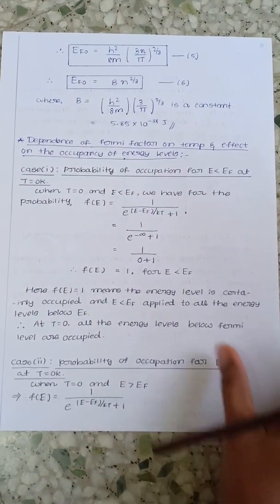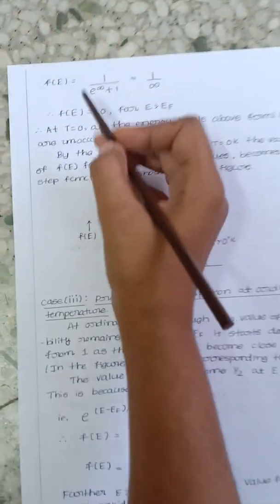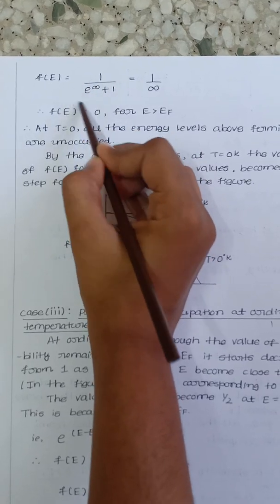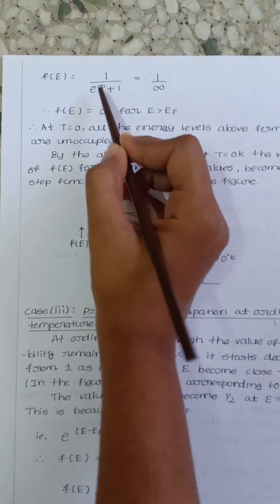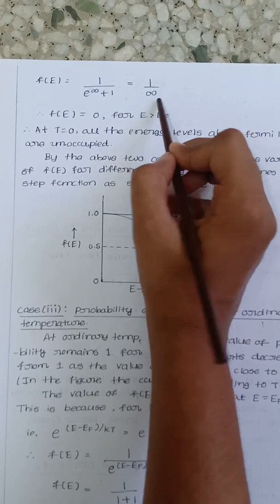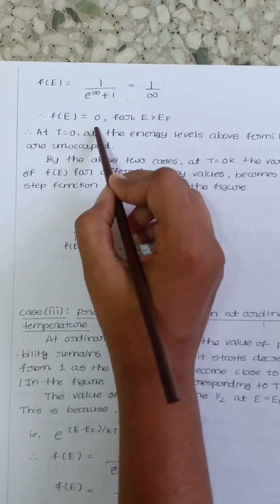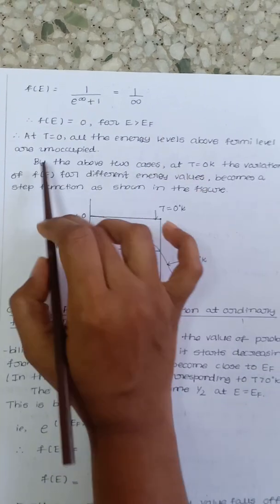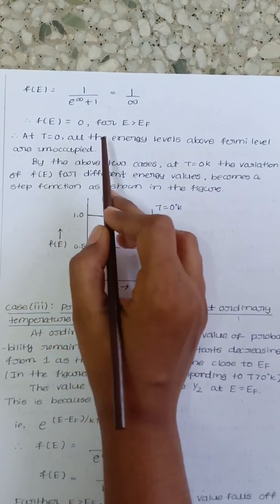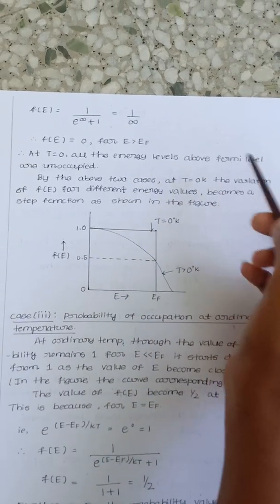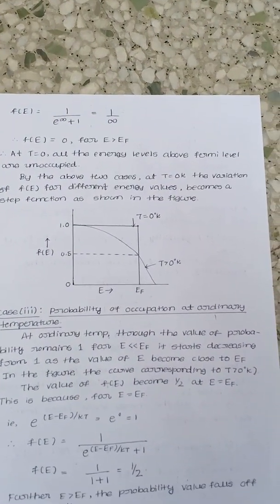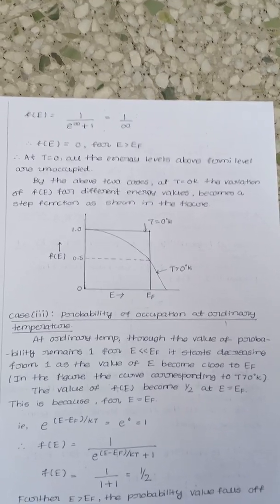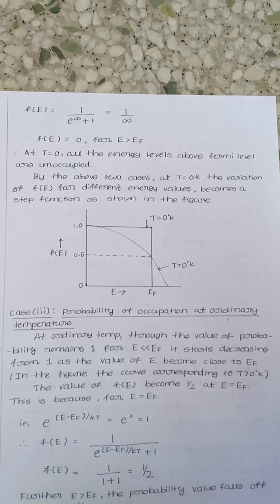Consider the same expression. When energy is greater than Fermi energy, it becomes e to the power of infinity, which is infinity. So 1 by infinity is 0 for E greater than EF. That means when temperature is 0, all the energy levels above the Fermi level are unoccupied. There will be 0% probability of occupation.